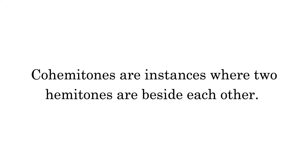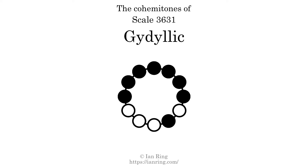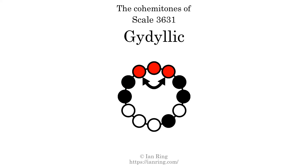Cohemitones are instances where 2 hemitones are beside each other. This scale has 5 cohemitones, at the indicated positions.